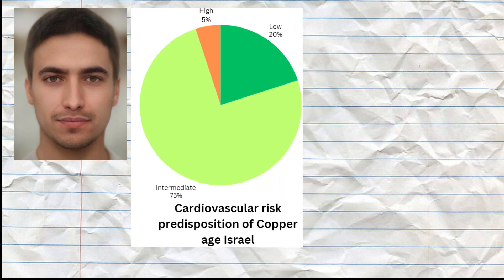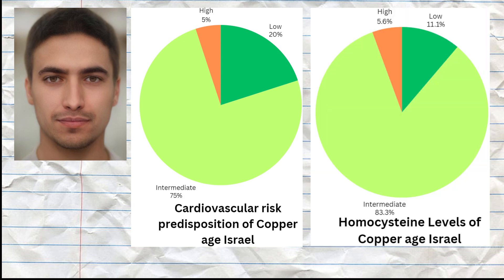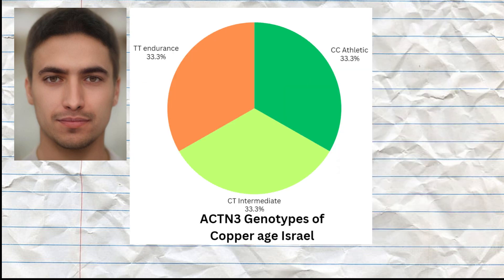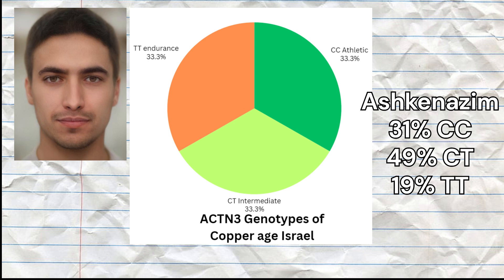They had a predisposition to a lower level of empathy based on OXTR genotypes. They had lower odds of cardiovascular issues and average levels of homocysteine, predisposing them to slightly lower odds of stroke or myocardial infarction. Regarding athleticism, their ACTN3 genotype distribution was similar to the Ashkenazi Jewish reference population on DBSNP, which suggests that regarding explosive power, their level of athleticism was similar to the Ashkenazi Jewish population.